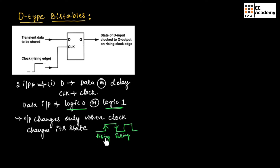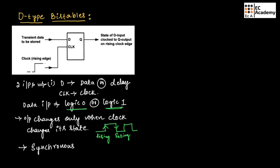We can design the D flip-flop either for the rising edge or for the falling edge of the clock. Here, a D flip-flop is designed for the rising edge of the clock, which means for every rising edge of the clock, the output signal will change. Hence, this operation is said to be synchronous operation — the output is in sync with the clock signal applied at the input.